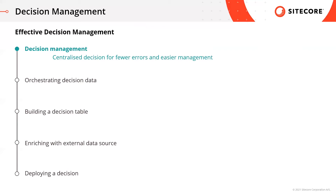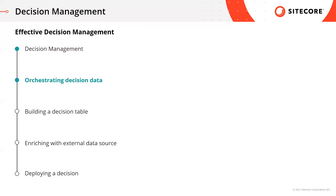To start with, let's look at the first step of effective decision management — how we can orchestrate data to be used in a decision. In today's example, we'll be modeling a decision to promote next best insurance products to different types of customers. I'll be showing Sitecore's decision canvas, how we can drag and drop data elements to orchestrate and enrich decisions, and finally how we can manipulate data using programmable elements.